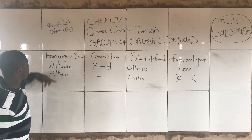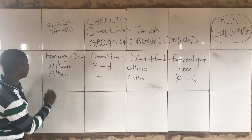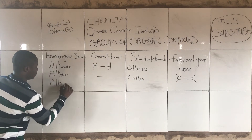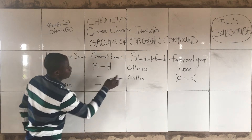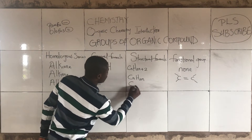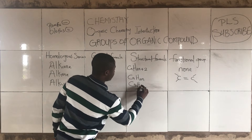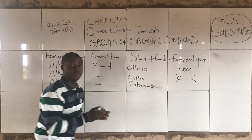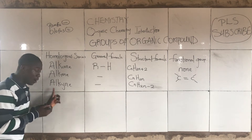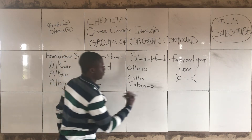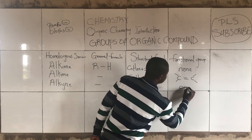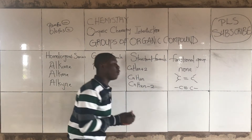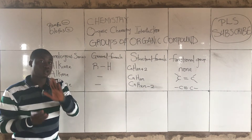Now talking about the next, which is alkynes. Their structural formula is simply CₙH₂ₙ₋₂, and their functional group corresponds to a triple bond. Alkynes are compounds with triple bonds.